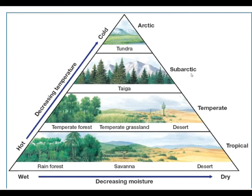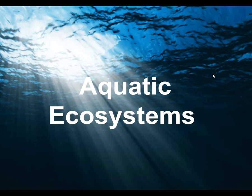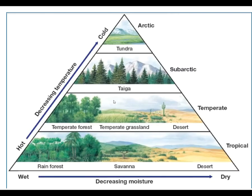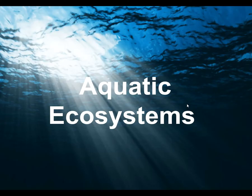We didn't talk about subarctic. That just means almost arctic - just barely there. But aquatic systems. Just like with the terrestrial biomes, there are some major abiotic factors that determine what's there. In the aquatic ecosystems, there are also a lot of important abiotic factors. One of those being the amount of salt. Salinity is the measurement of salt in the water.